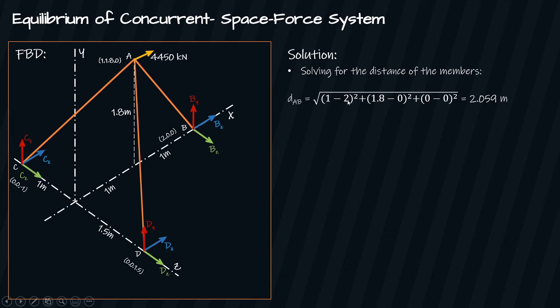The values were taken from the coordinates of points A and B. 1 and 2 is the x coordinates AB: 1.8 minus 0 is 1.8 and 0, while 0 and 0. This value is also the distance component of member AB.